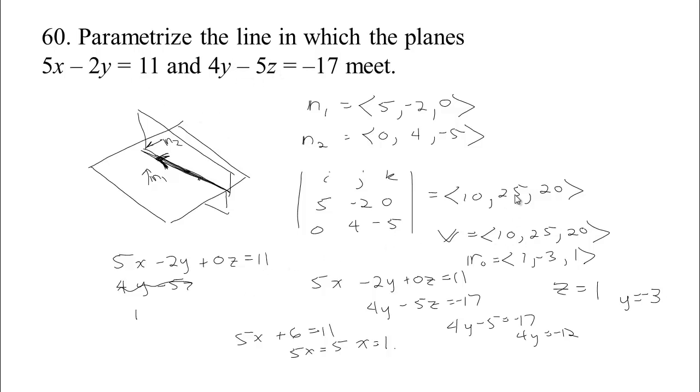So now we can parametrize the line. Here's our parametrization. Remember we always take R of t is equal to Vt plus R0. And V in this case is 10, 25, 20t plus, we found that point, 1, negative 3, 1. And so we get 10t plus 1, 25t minus 3, and 20t plus 1. So here's the equation of the line where the two planes meet.